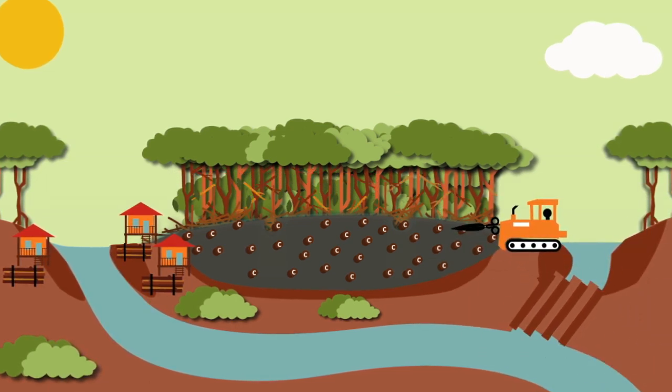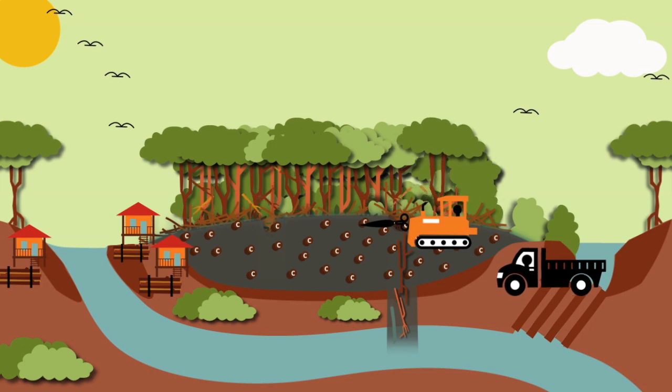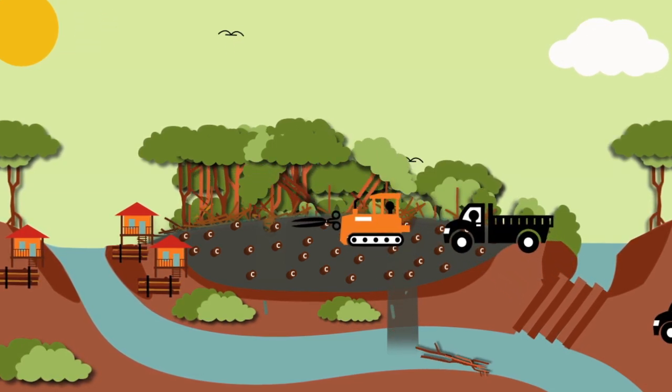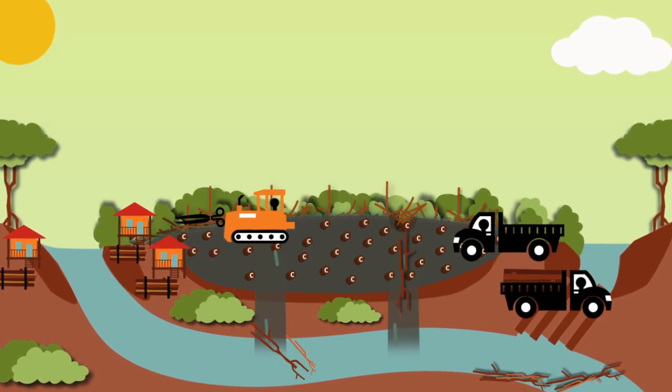Bulldozers and excavators cut through the forest. Large canals and trenches drain the peatland and make way for the transport of timber and other products intended for planting in the future.